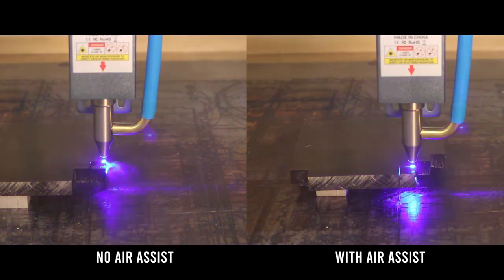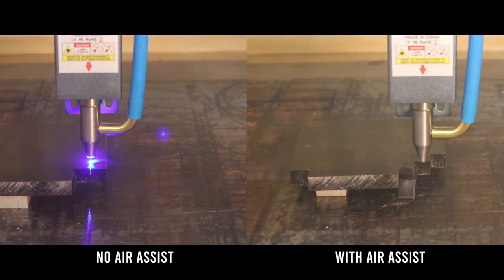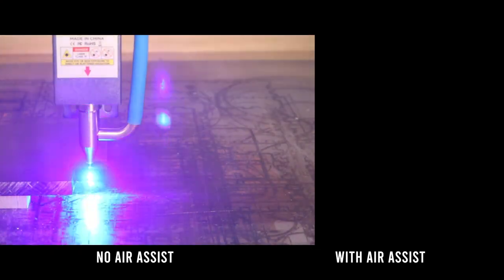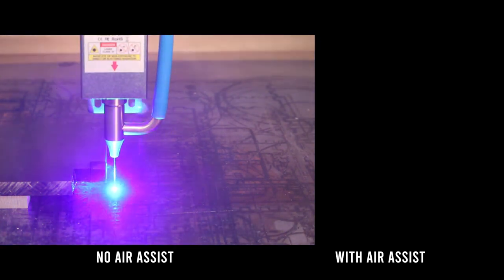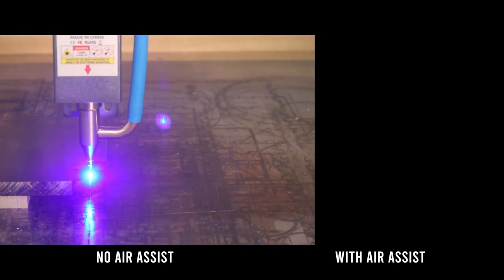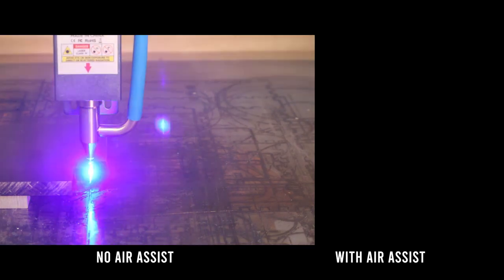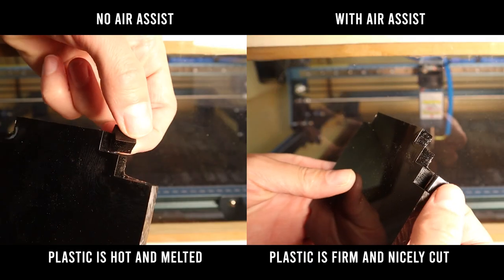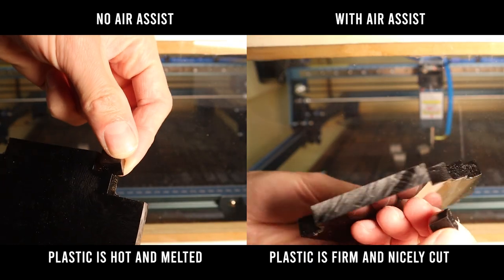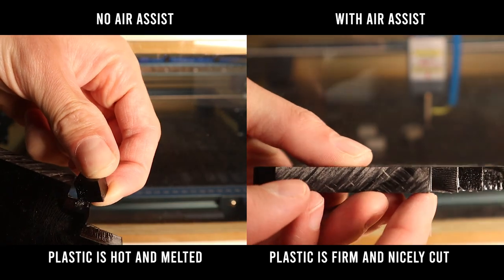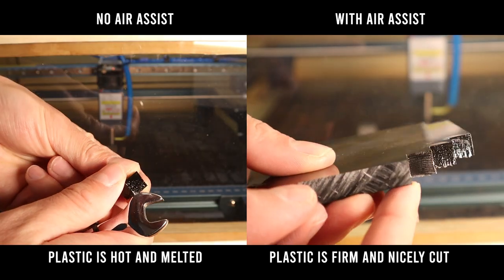It took 49 passes for the 10mm acrylic board without air assist, but when using air assist, the machine needed only 25 passes and the cut was perfectly clean. The air assist helps a lot in this situation, as it helps to cool down the material. I am very impressed with this cut. None of the machines were able to do that so far.